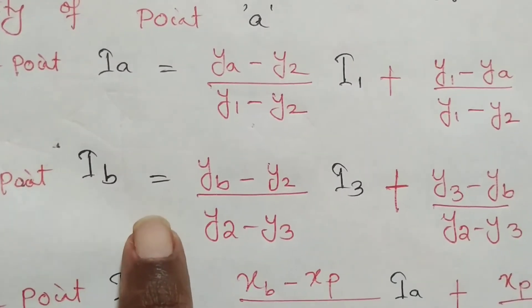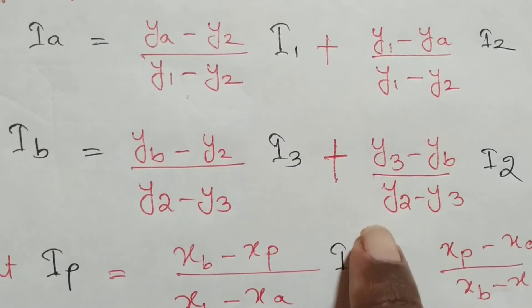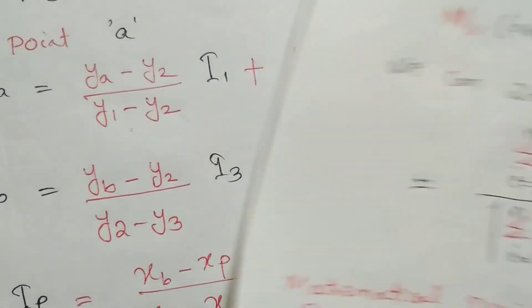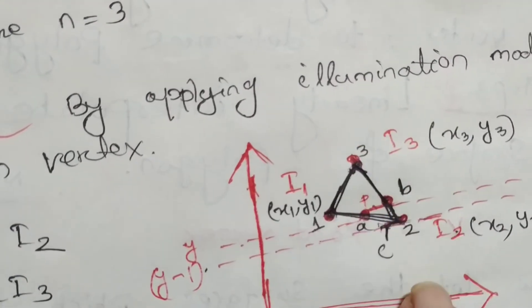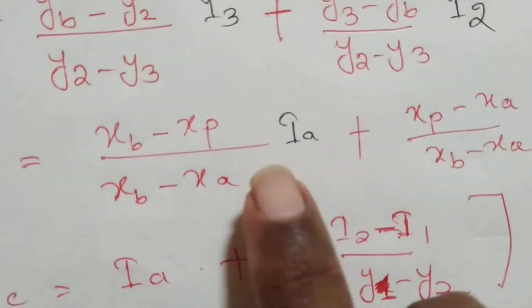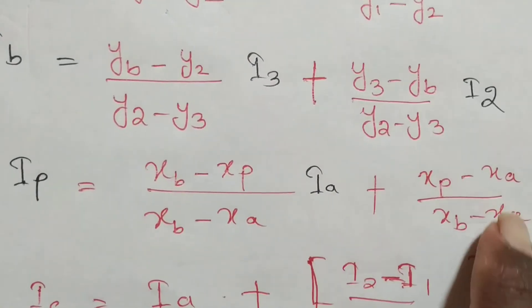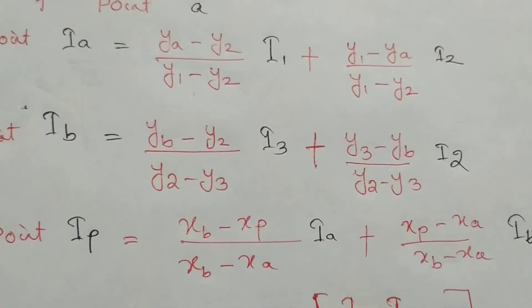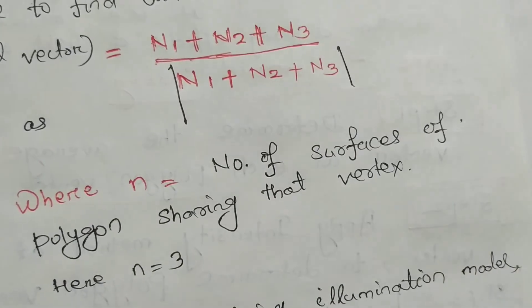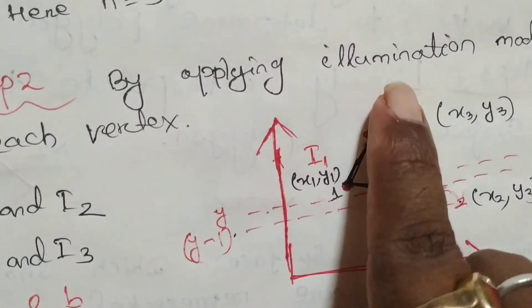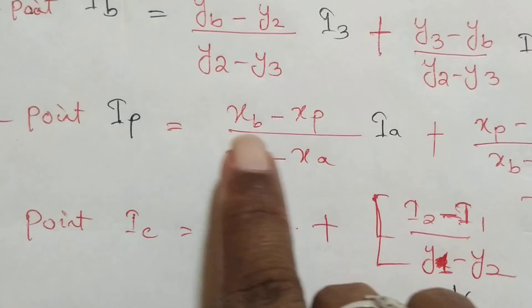Like that for point B, we will get: Yb minus Y2 divided by Y3 minus Y2 times I3, plus Y3 minus Yb divided by Y3 minus Y2 times I2. Ib is where? B lies between I3 and I2, so in this equation we are finding this coordinate. Similarly, here we have found the Ip point.